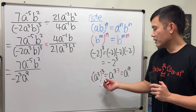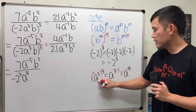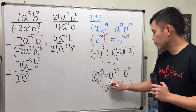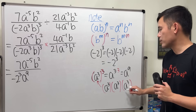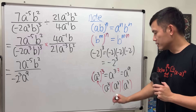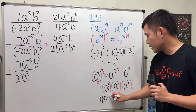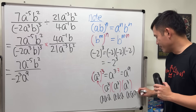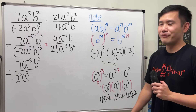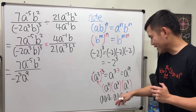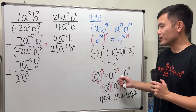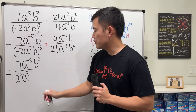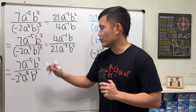You can prove it: a to the third to the third power means a to the third times a to the third times a to the third. Each group gives you a times a times a, and with three groups, we have nine a's total — that's a to the ninth. But don't do it like this every single time; it takes too long. Lastly, b to the first power, distribute the power, so we just have b to the third power. Done with that part.